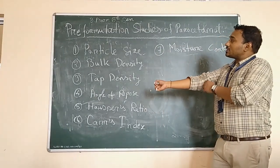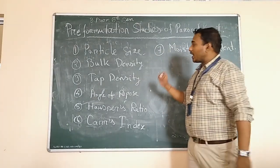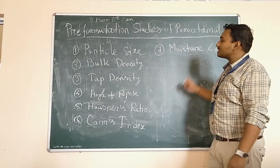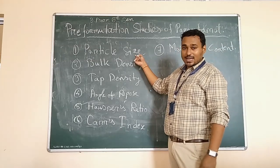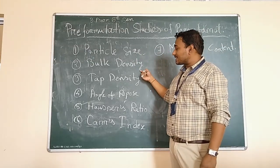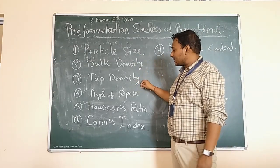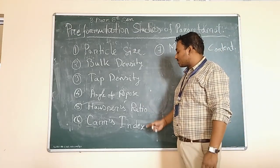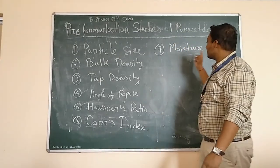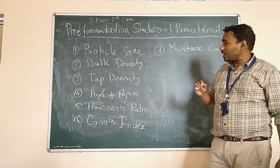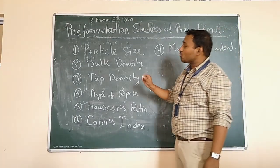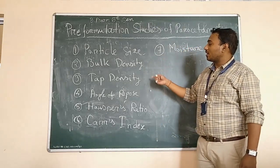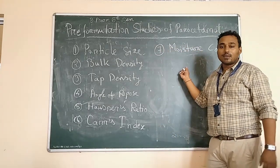In these pre-formulation studies, the points we have to consider are: first, particle size; second, bulk density; then tap density; then angle of repose; then Hausner ratio; then Carr's index; then compressibility. These are the parts we are going to discuss in this session, as given on the blackboard.